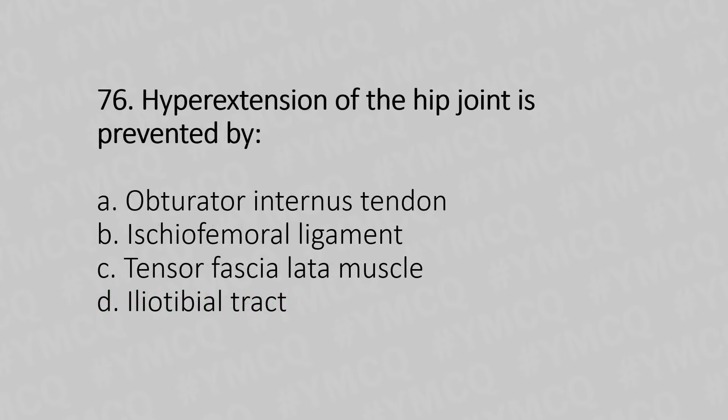Question 76: Hyperextension of the hip joint is prevented by — option A: obturator internus tendon, option B: ischiofemoral ligament, option C: tensor fasciae latae muscle, option D: iliotibial tract. The answer is option B: ischiofemoral ligament.